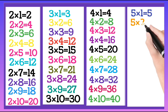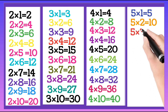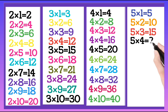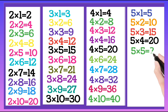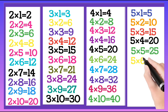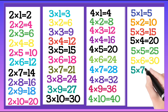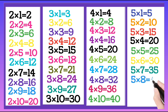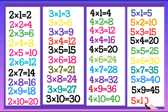Five 1's are 5, five 2's are 10, five 3's are 15, five 4's are 20, five 5's are 25, five 6's are 30, five 7's are 35, five 8's are 40, five 9's are 45.